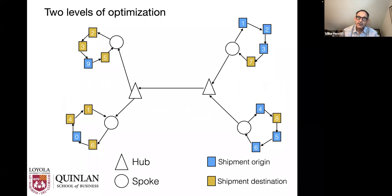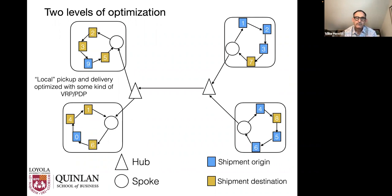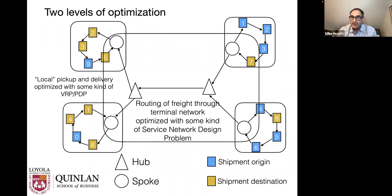These operations are typically planned at two levels from an optimization perspective. The first is local pickup and delivery — the UPS driver coming to your house with smaller vehicles going to and from customer sites to pick up and deliver pallets. That's often optimized by solving some kind of vehicle routing problem or pickup and delivery problem, possibly with time windows. My area of expertise is more about middle mile logistics — the optimization of freight through the network itself, generally solved by a service network design problem.